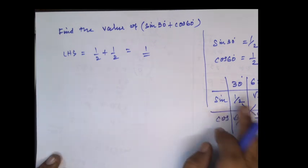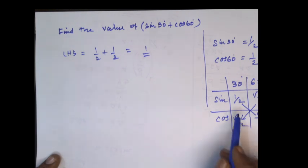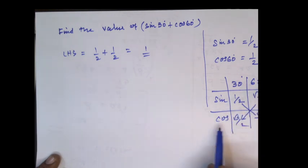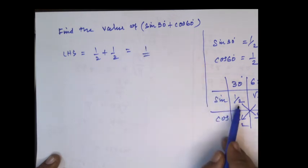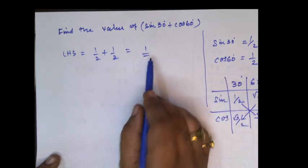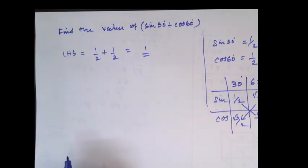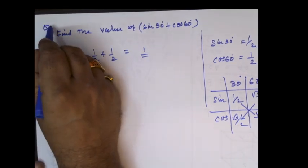So sine 30 degree is 1 by 2, sine 60 degree is root 3 by 2, and 1 by 2 comes here, so cos 60 is 1 by 2. That is why sine 30 is 1 by 2 and cos 60 is 1 by 2, so 1 by 2 plus 1 by 2 is equal to 1. Let us proceed with the next sum.